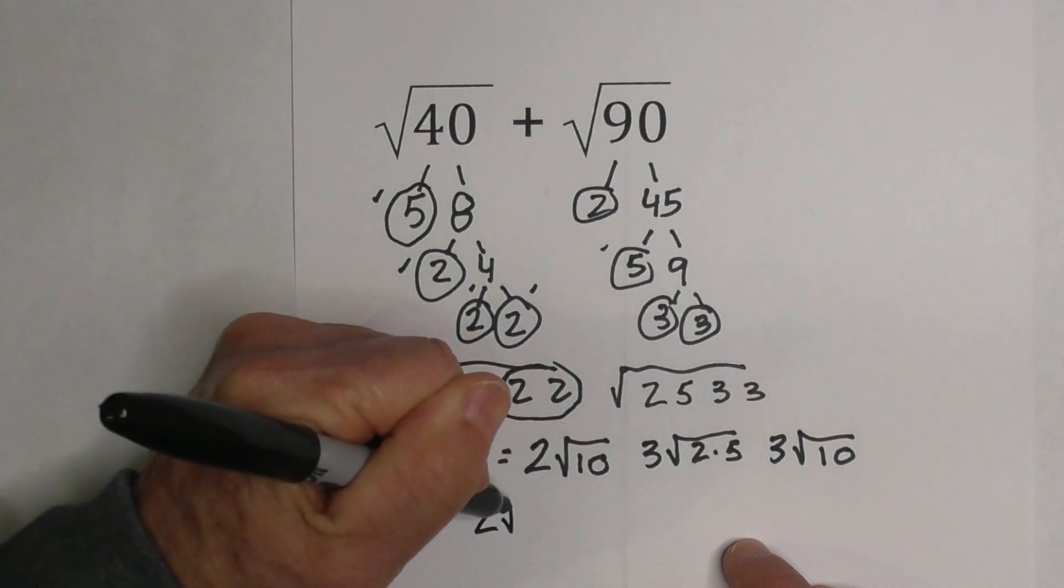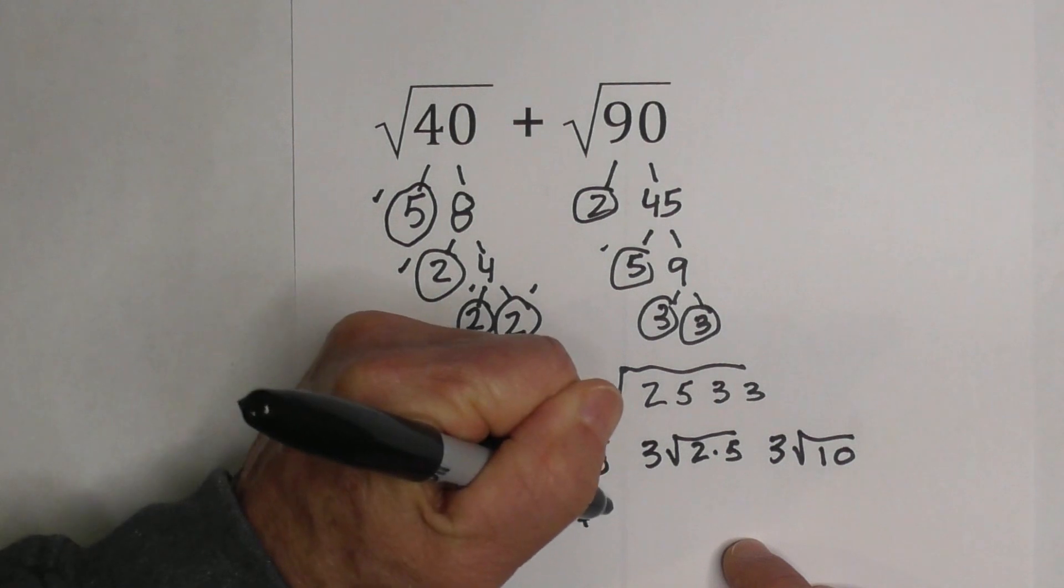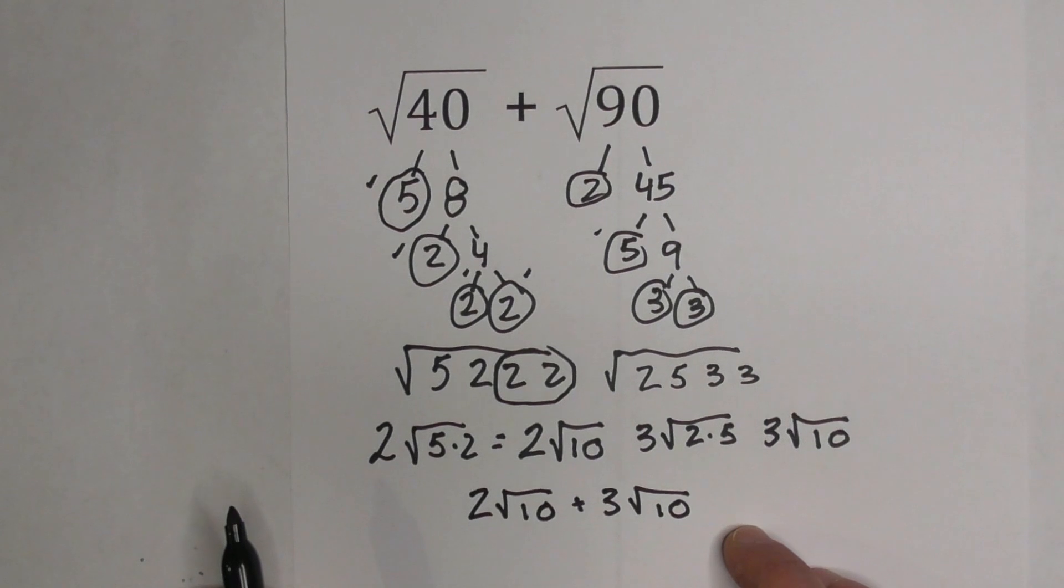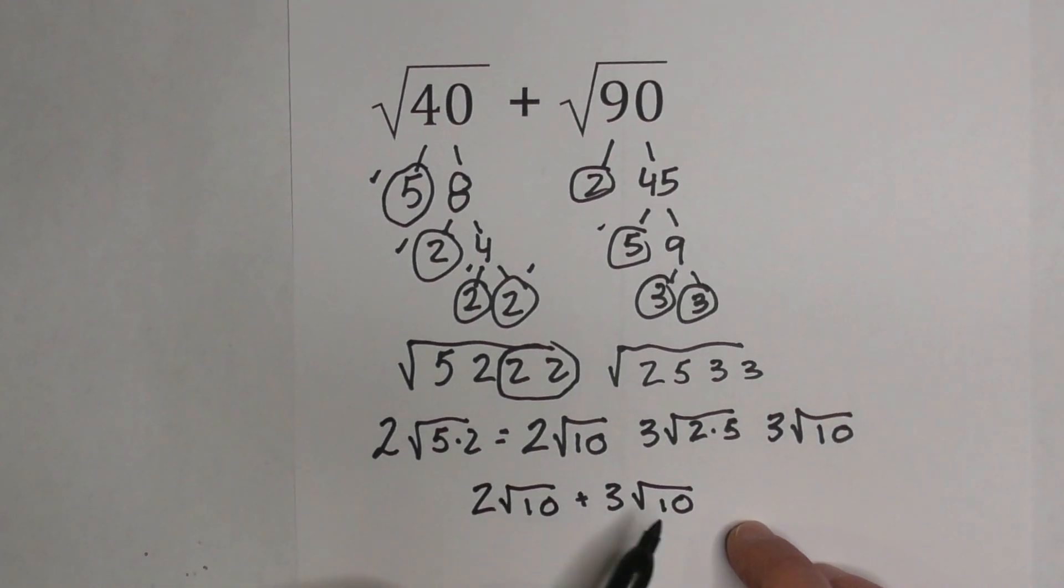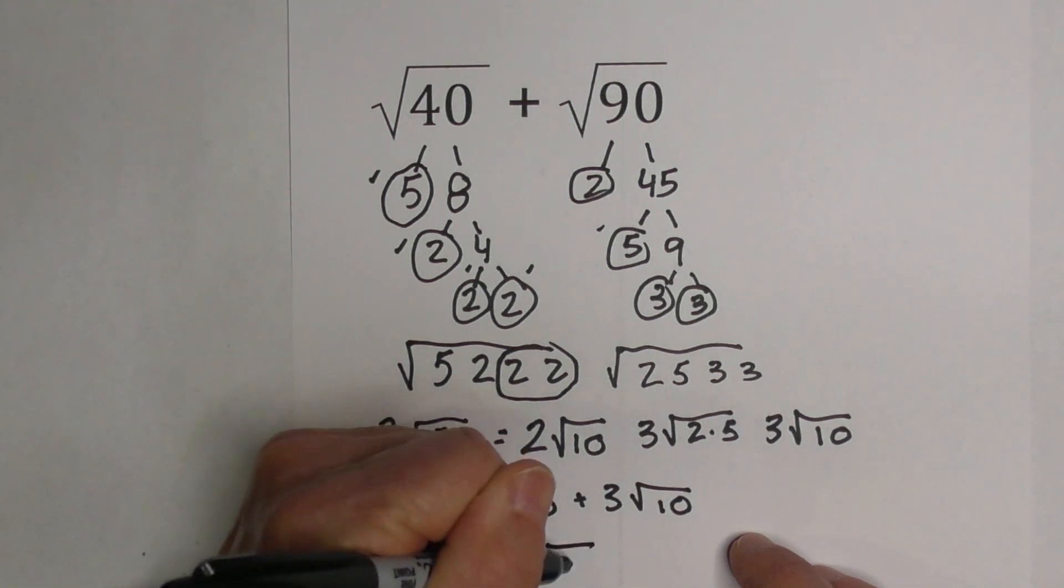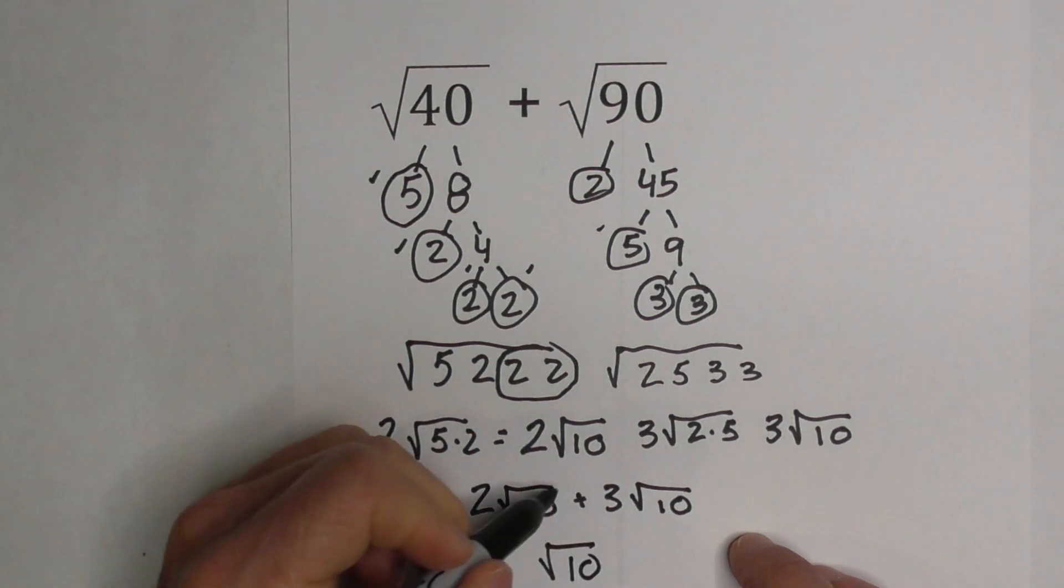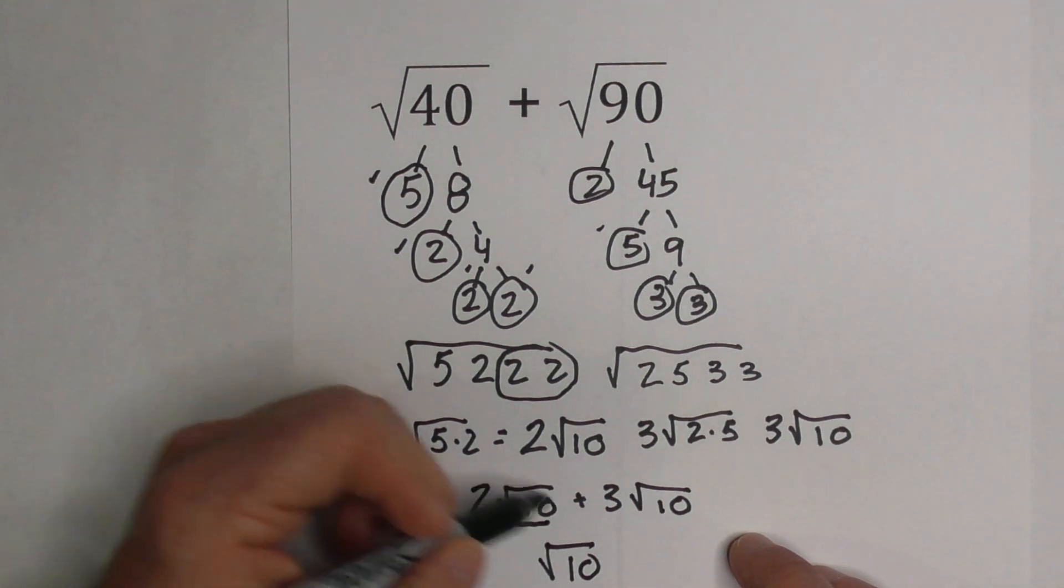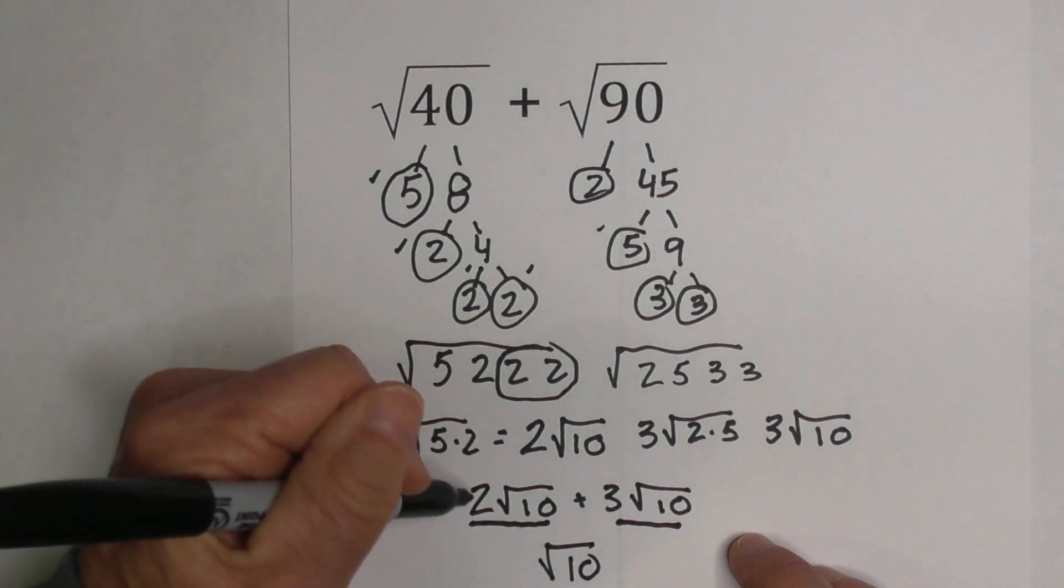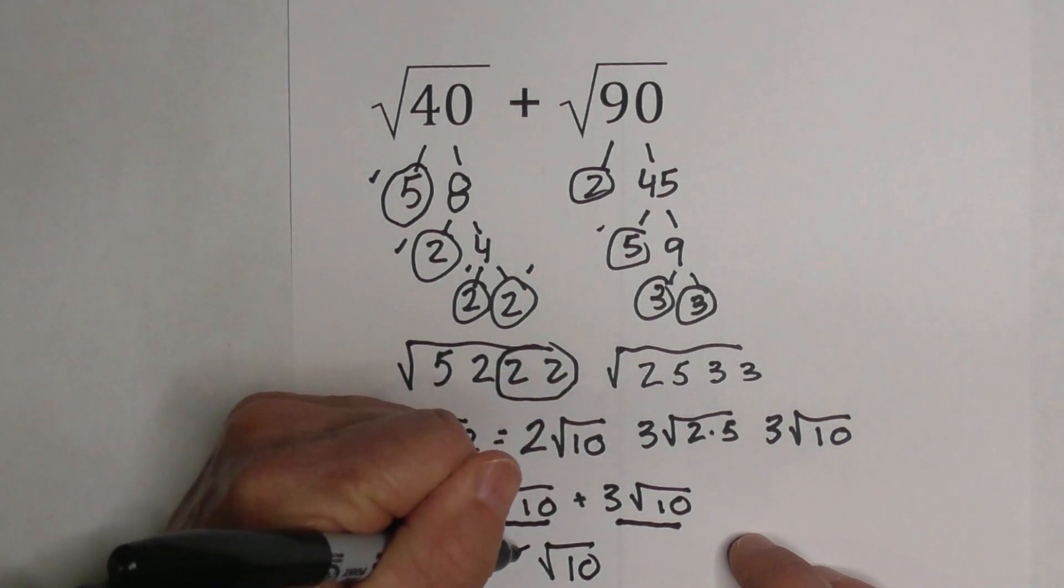So now I have 2√10 plus 3√10. Since I have like terms, the √10, I can add them. So it becomes 5√10. Think of this as a whole unit—the 2√10 is a unit and the 3√10 is a unit. I'm adding these units, keeping the √10, and then 2 plus 3 is 5.